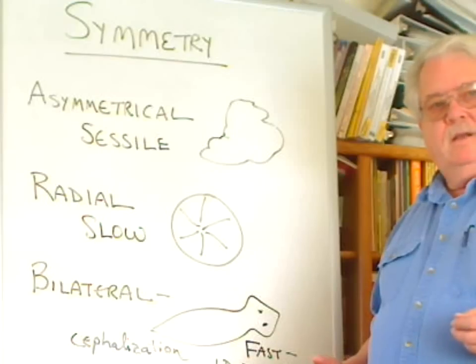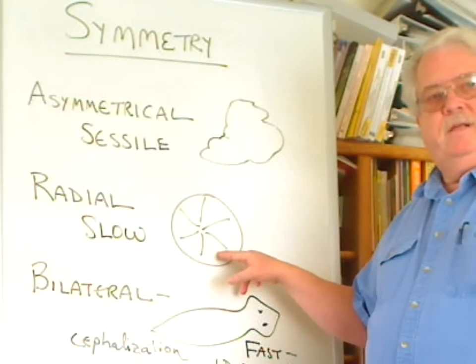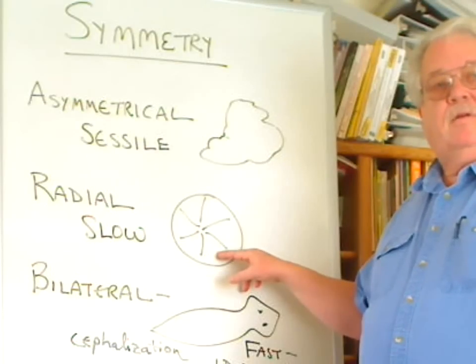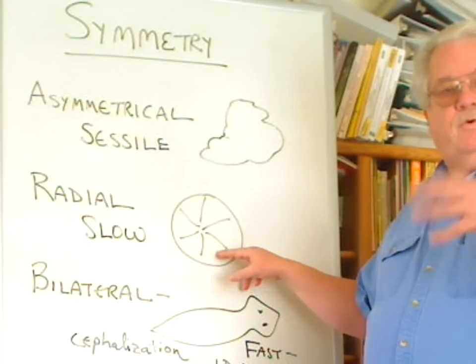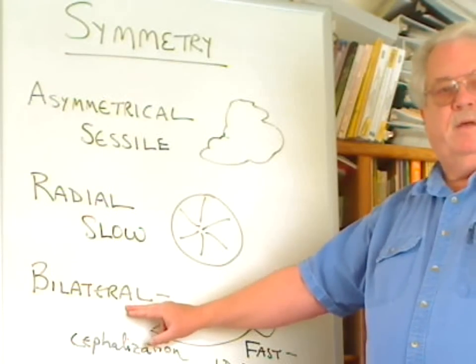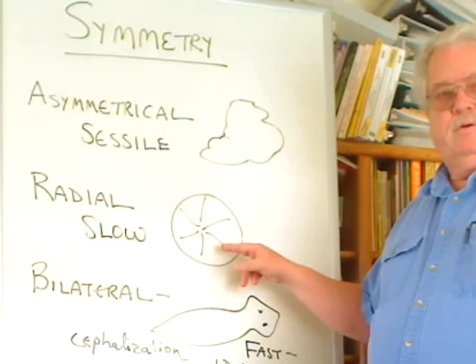But one thing you have to keep in mind: in the Echinoderms, radial symmetry is characteristic of the adults who do move slowly, but the larvae, which swim through the plankton in the water, are typically bilaterally symmetrical, and then they metamorphose or change into radially symmetrical adults.